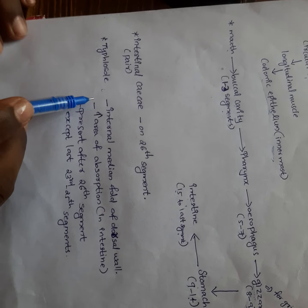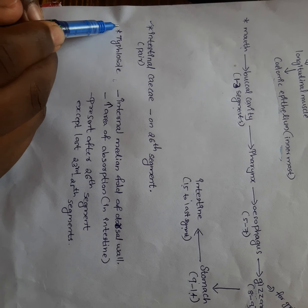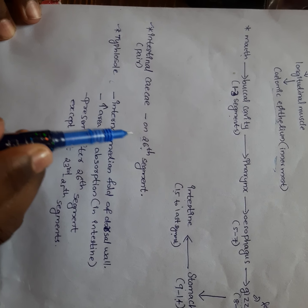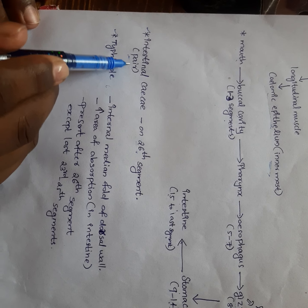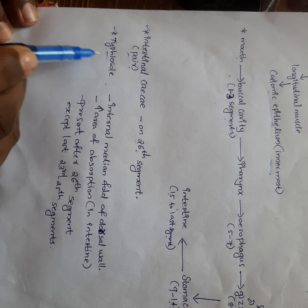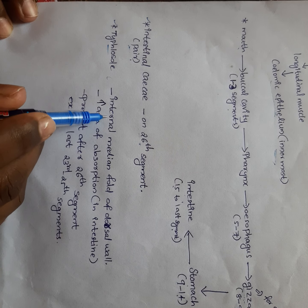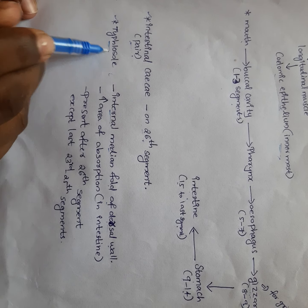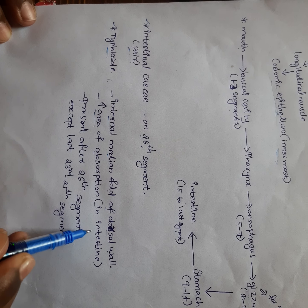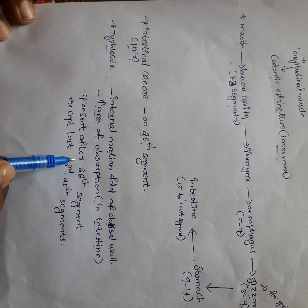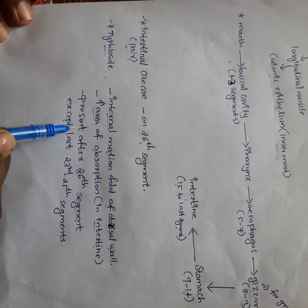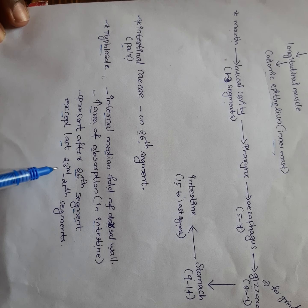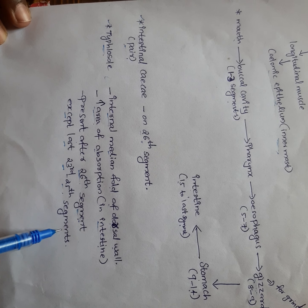Next, I am taking two more structures. One is intestinal caeca, present on the 26th segment as one pair. The other is typhlosole, which is an internal median fold of the dorsal wall. The function of typhlosole is to increase the absorption area of the intestine. It is present after the 26th segment, except for the last 23rd to 25th segments.